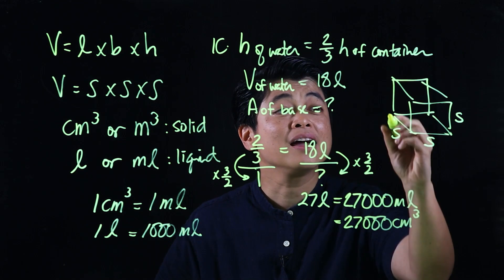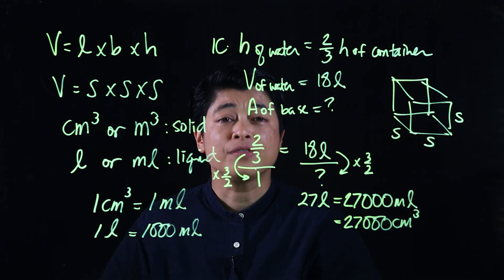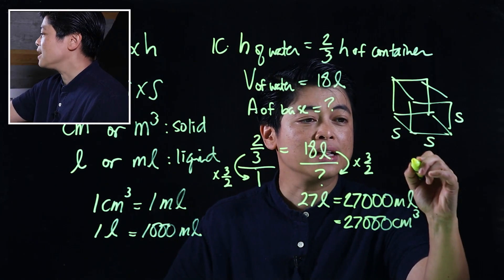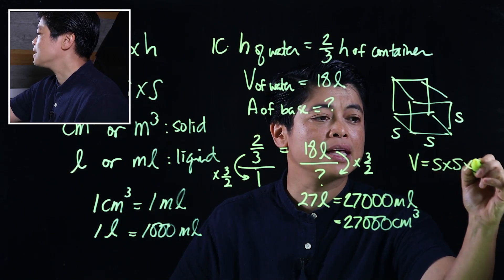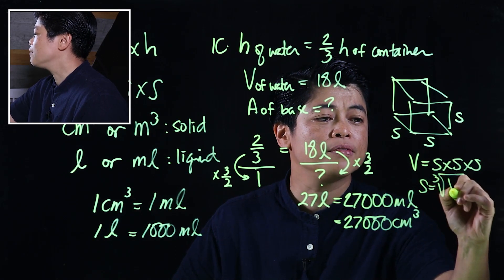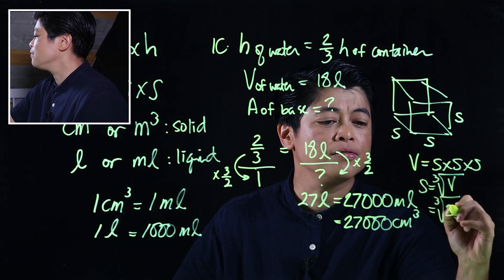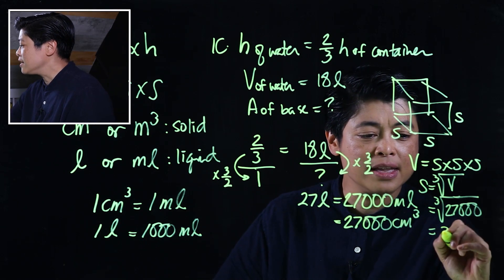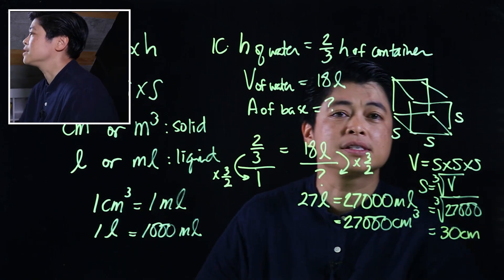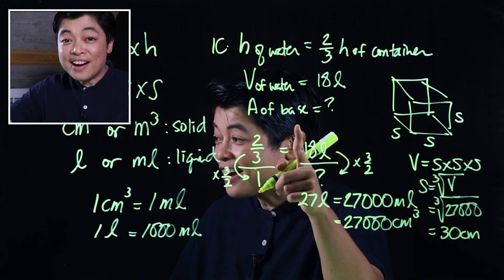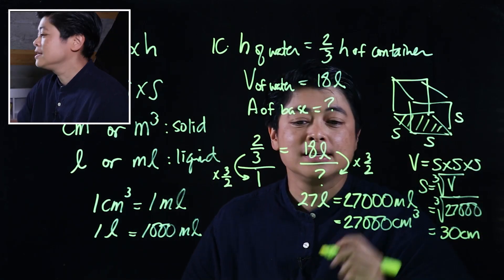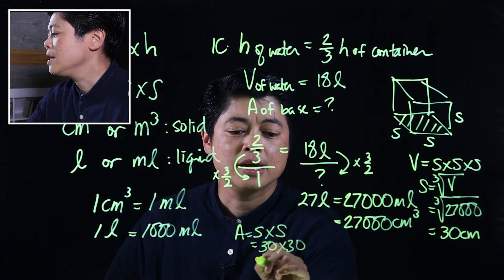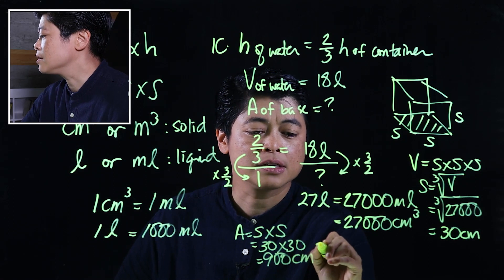To find the area of the base, we first need to find the edge of the cube. Since volume equals side cubed, the side equals the cube root of 27,000. Putting that in the calculator gives 30 centimeters. The base area is then side times side: 30 times 30 equals 900 centimeters squared.